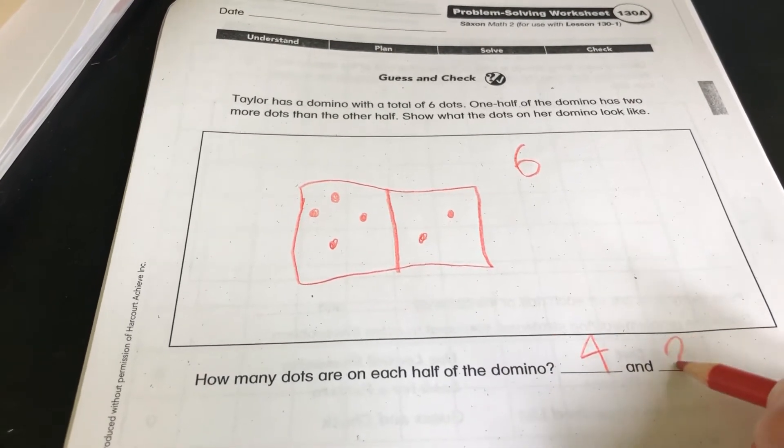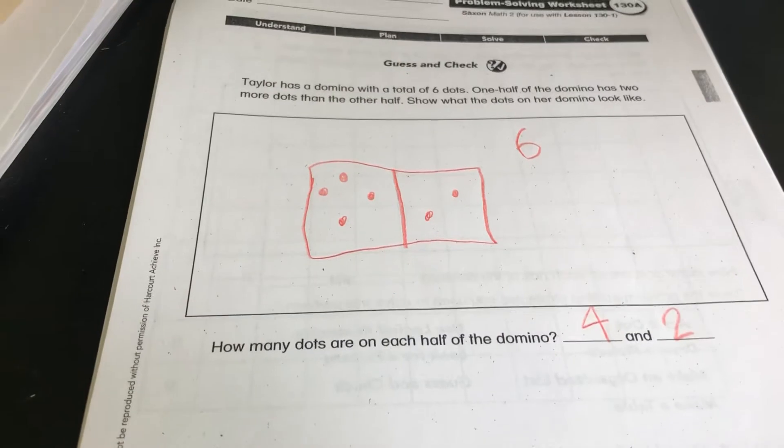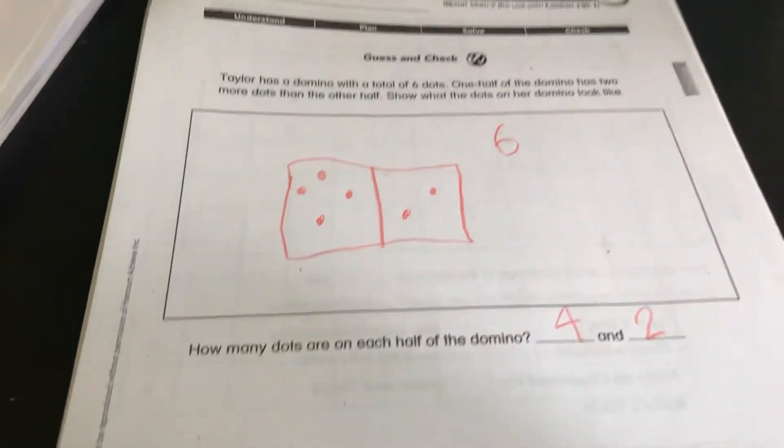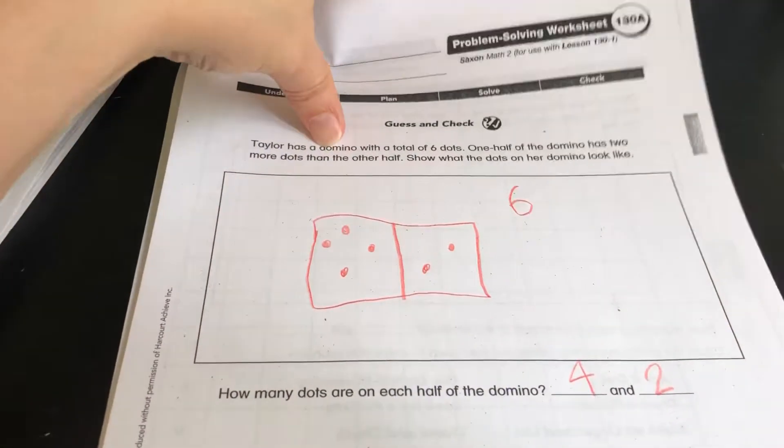So how many dots are on each half of the domino? Four and two. And how did we figure this out? We drew a picture.